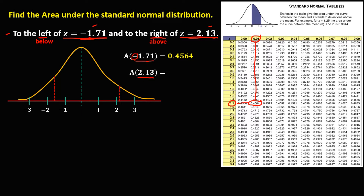For the area of 2.13, we have 2.1, then 0.03 — that's 2.13. Connect to find the area. Therefore, the area of 2.13 is 0.4834. Since the area on this table is between the mean and the Z standard deviation.